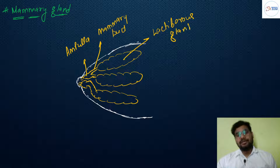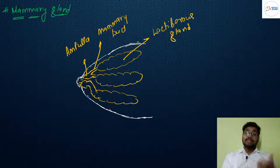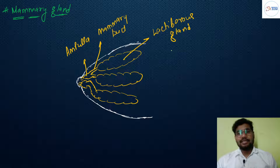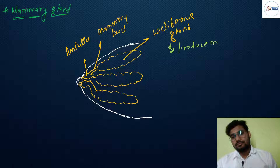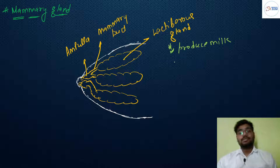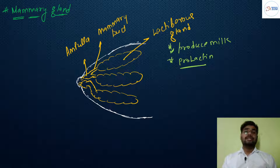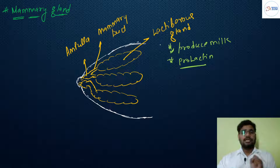The lactiferous glands produce milk. We will study lactation in detail later. The hormone responsible for the formation of milk is prolactin, which is secreted from the anterior lobe of the pituitary gland and acts on the lactiferous glands.